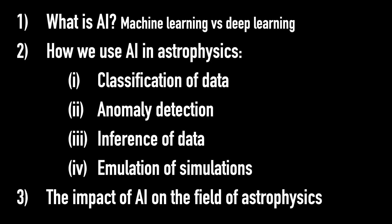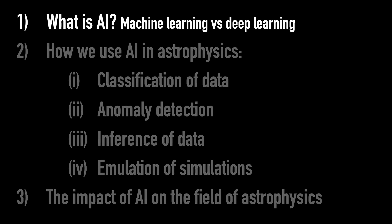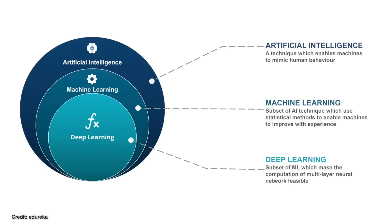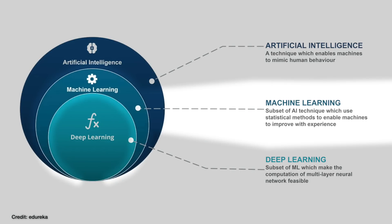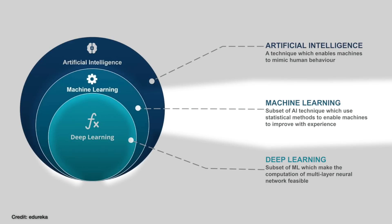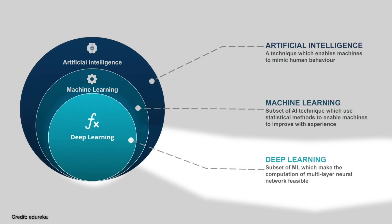But before we dive into how we use AI, let's start with what actually is AI. Because it's a very big umbrella term that encompasses a lot of things in computer science, including machine learning and deep learning. Machine learning is just the very first step along the AI journey before you get to artificial general intelligence and super intelligence, where machines actually gain consciousness. And the key thing here is that we're very firmly still in the machine learning and deep learning parts of AI.